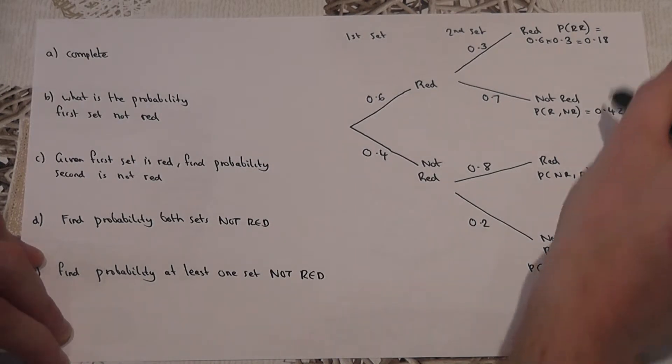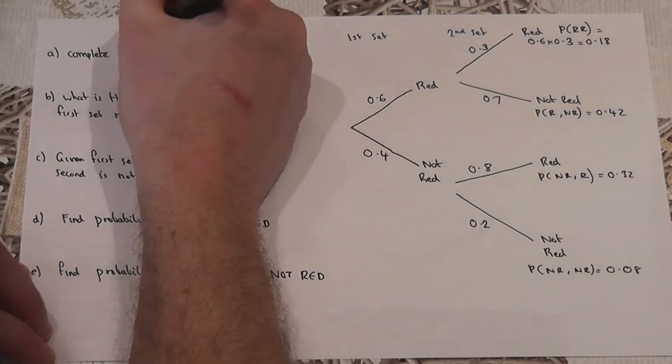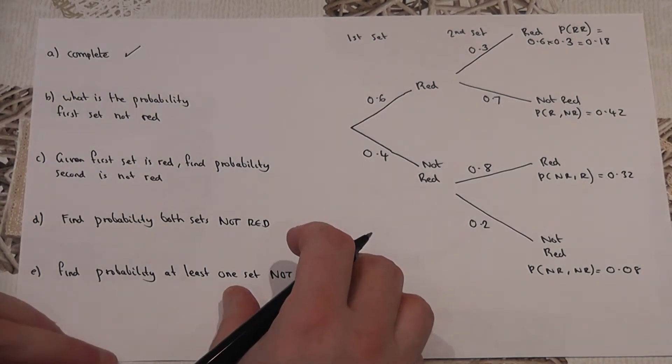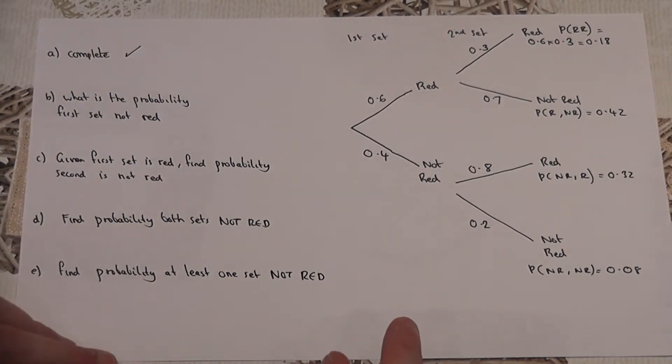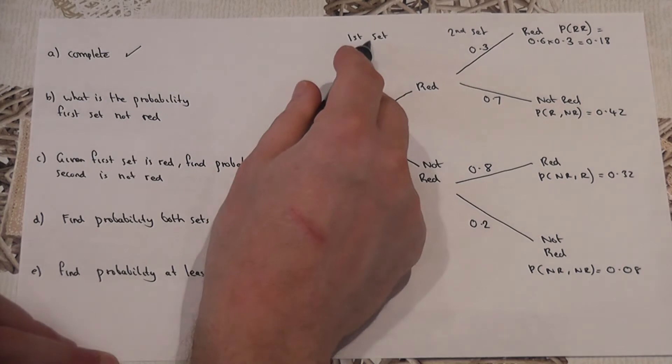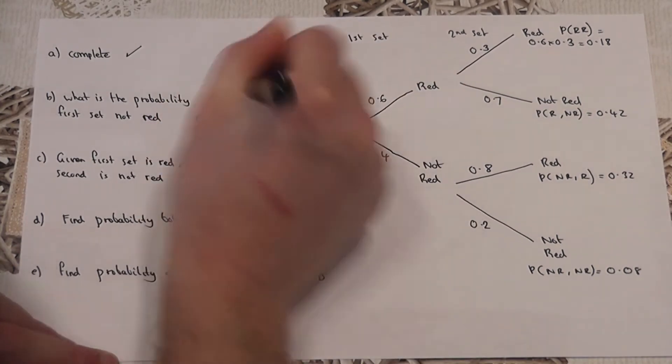Each of these numbers here should add to make the whole one, and it's always worth checking that. In this case, they do. So that's the tree diagram completed. There are four questions to answer of increasing complexity. So part B, what is the probability that the first set is not red? The first set not red is just 0.4.